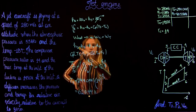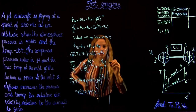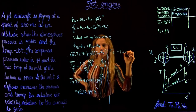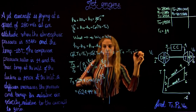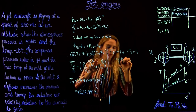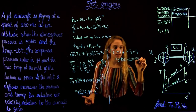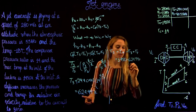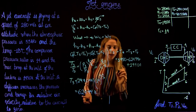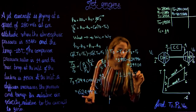Now we can solve for T5. Rearranging the work balance: T5 = T4 − T3 + T2 = 1450 − 624.99 + 294.04, giving us a temperature at state 5 of 1119.05 Kelvins.